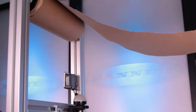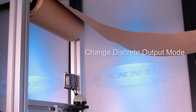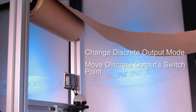This video tutorial will demonstrate how to change the sensor's discrete output mode and use the adjust functionality on the LE-550 to move the discrete output switch point without needing to present a target for roll diameter applications.